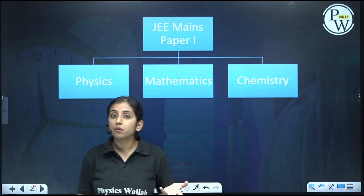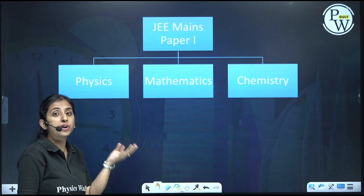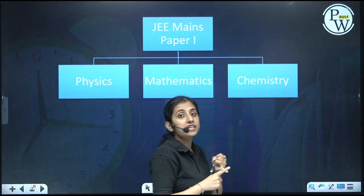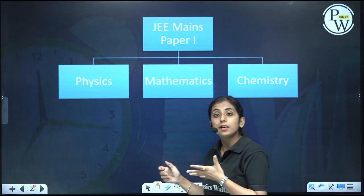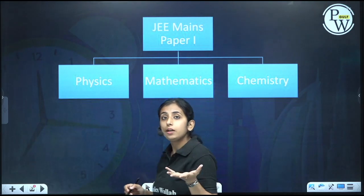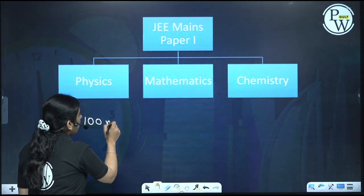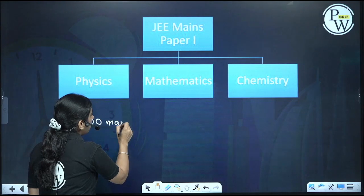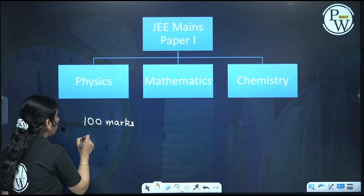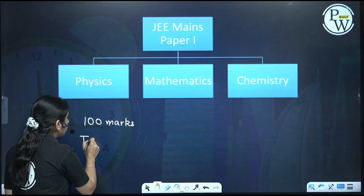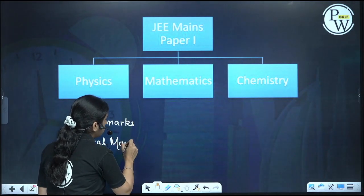Let us have an overview of the paper. JEE Mains Paper 1 comprises of 3 subjects — Physics, Mathematics and Chemistry — with all 3 subjects having equal weightage of 100 marks each. So all subjects come to 100 marks each, with the overall total marks being 300.